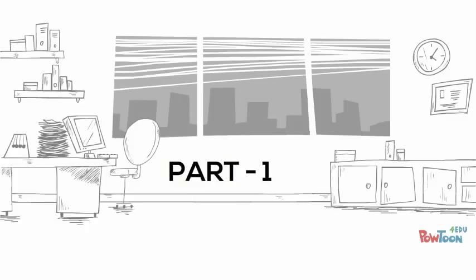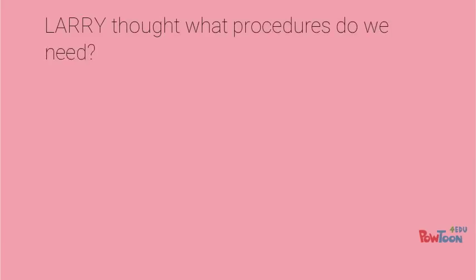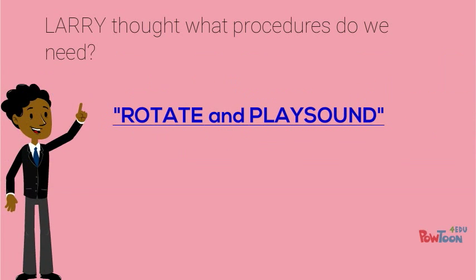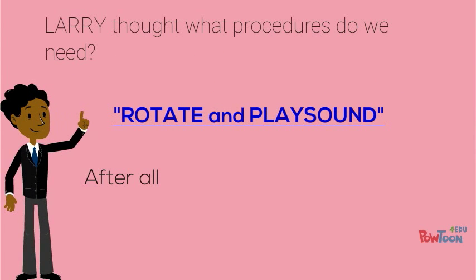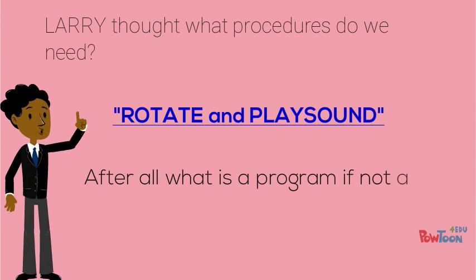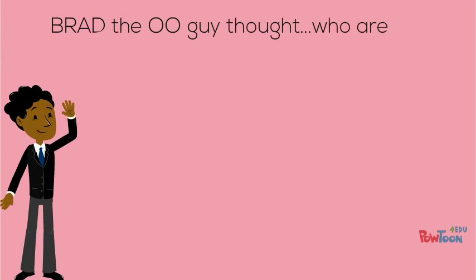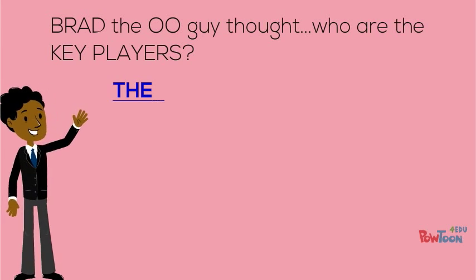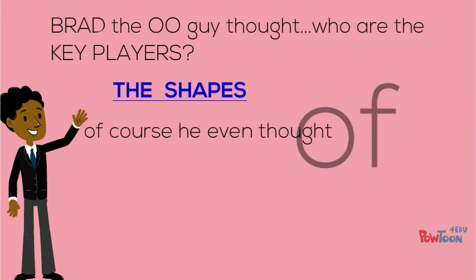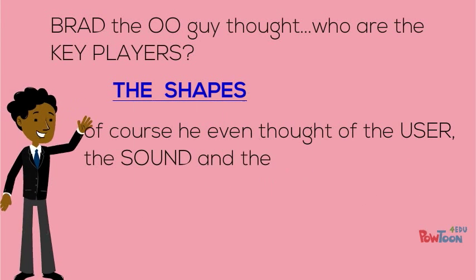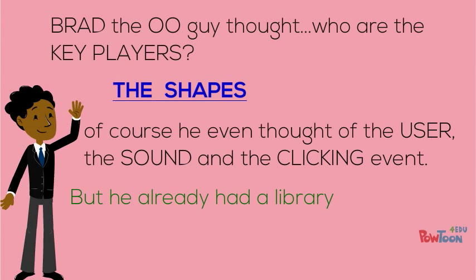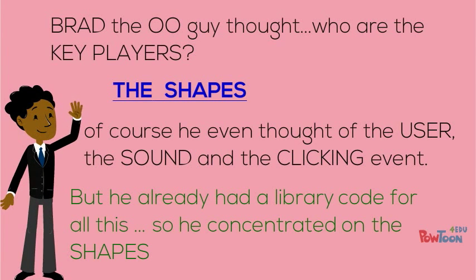So how did Larry and Brad think? Larry thought about what procedures would be needed: rotate and play sound. And Brad, the object oriented guy, thought about the key players — the shape, the user, the sound, and the clicking event. But due to the library code available, he mainly concentrated on shapes.